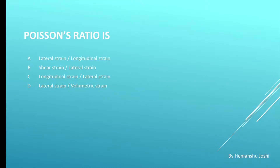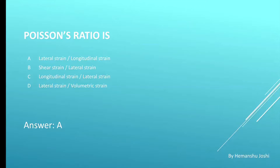Next question. Poisson's ratio is: options are A. Lateral strain by longitudinal strain, B. Shear strain by lateral strain, C. Longitudinal strain by lateral strain, and D. Lateral strain by volumetric strain. The answer is A. Lateral strain by longitudinal strain. It is also known as lateral strain by linear strain.